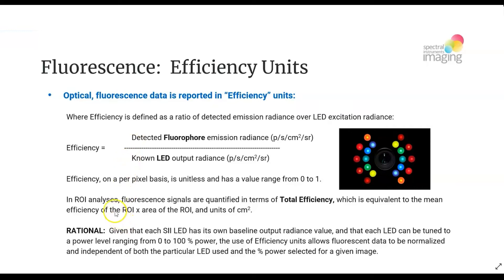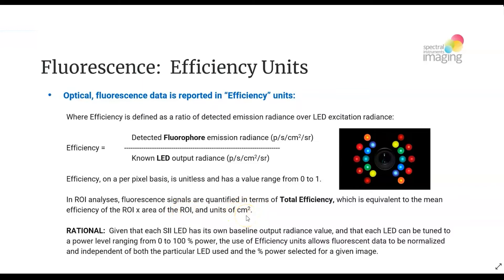When one does ROI analyses of fluorescent data in terms of efficiency, the value that you're looking to quantify is total efficiency, which is equivalent to the mean efficiency of the region of interest times the area of that region of interest, and therefore the units will be centimeters squared.